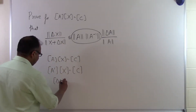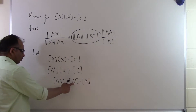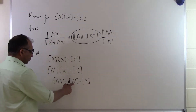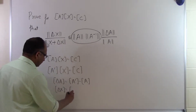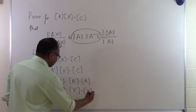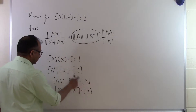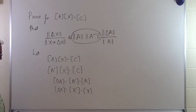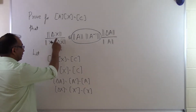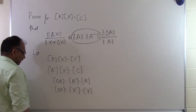We define delta A as A prime minus A — that is, the coefficient matrix we changed to minus the original A matrix. And delta X is defined as X prime minus X, the difference between what X changed to minus the original solution vector. Based on this, let's figure out the relationship between the relative change in X and the relative change in the A matrix.